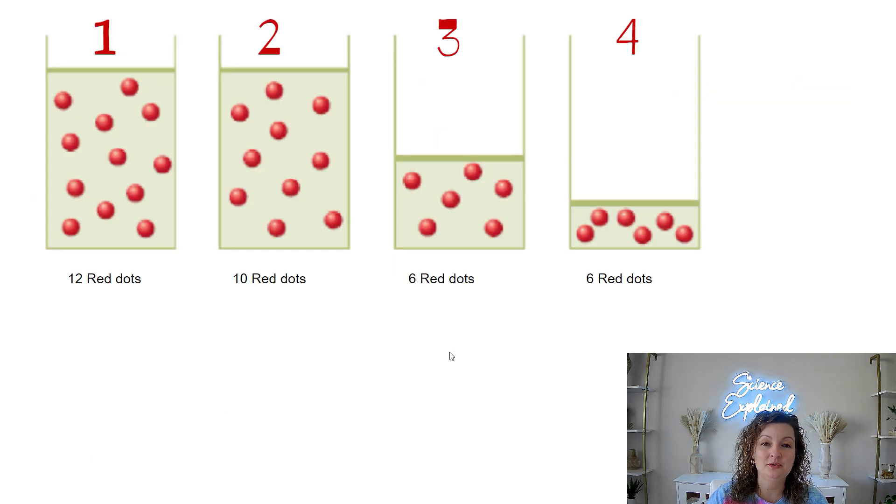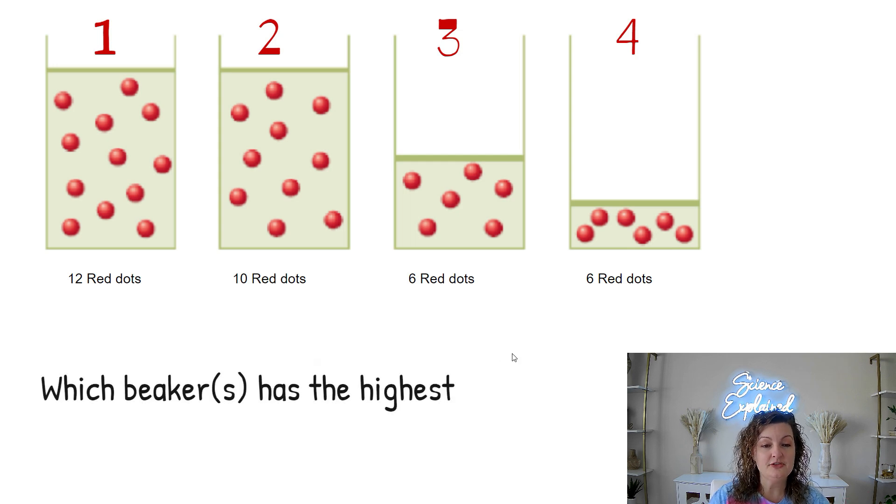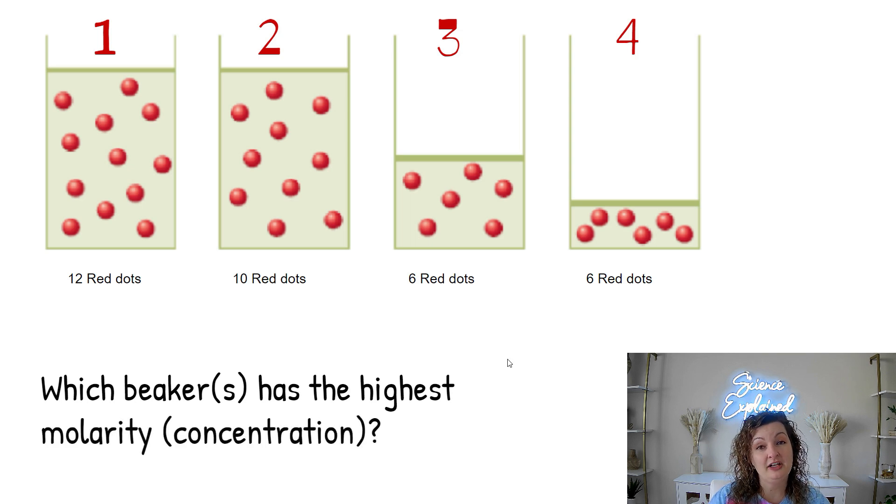So here we have four containers, and I put how many of the red dots, and the red dots are really representing your solute. This line up top is where your solvent ends, so you can see the ratios between them. So which beaker or beakers has the highest molarity, which is concentration? Go ahead and pause your video and see if you can figure this one out.